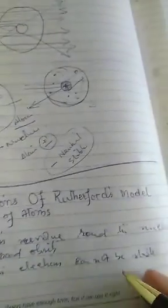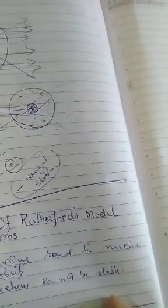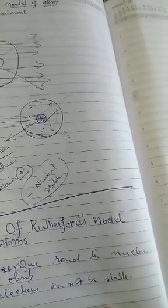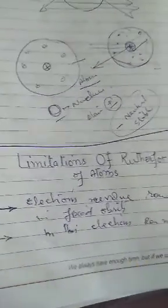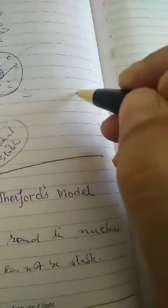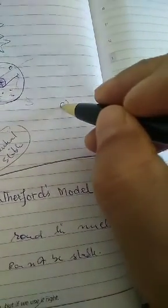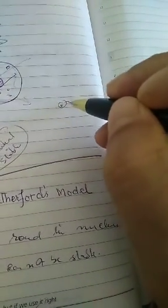While accelerating, while experiencing acceleration, electrons will lose energy. These electrons will lose energy. In this way, if it moves around the atom, while moving, it will lose energy.